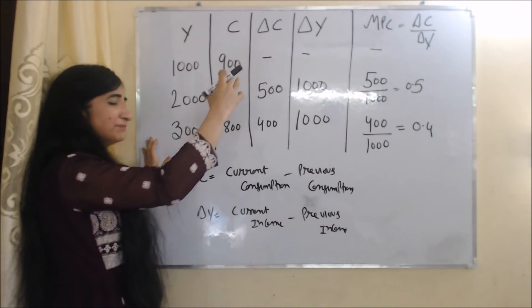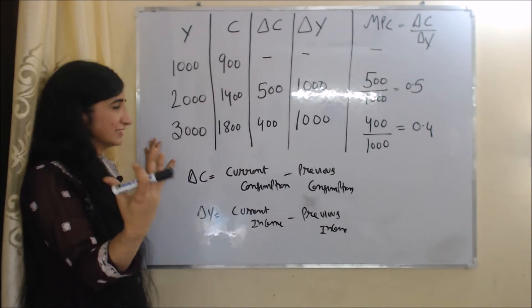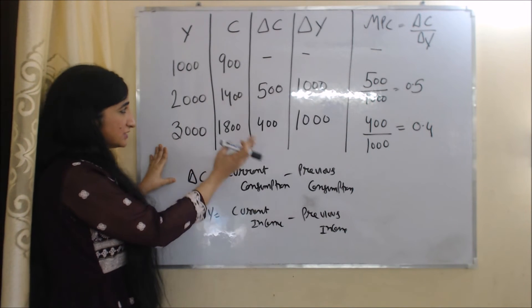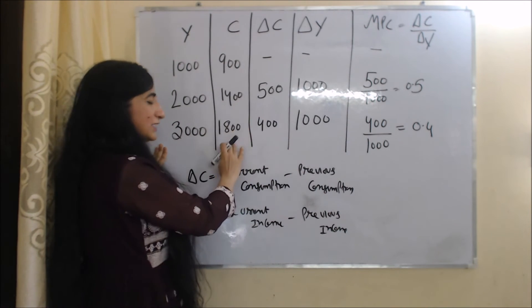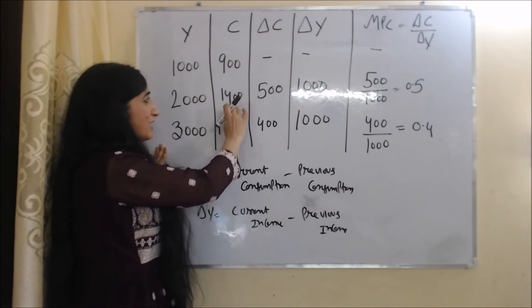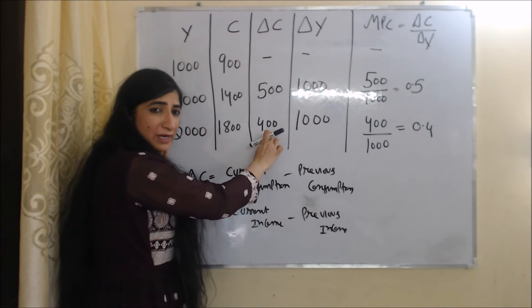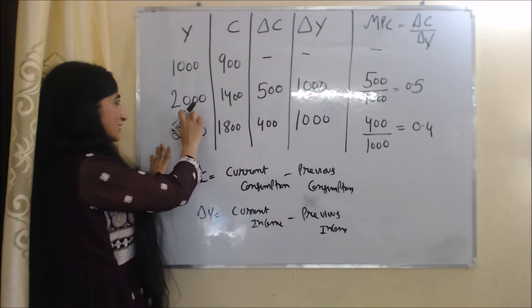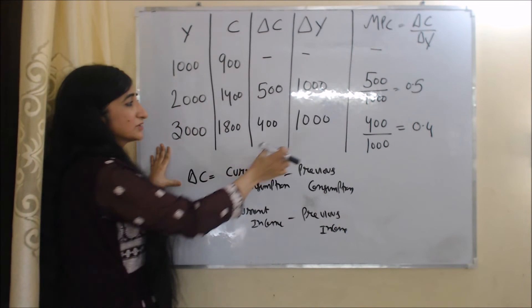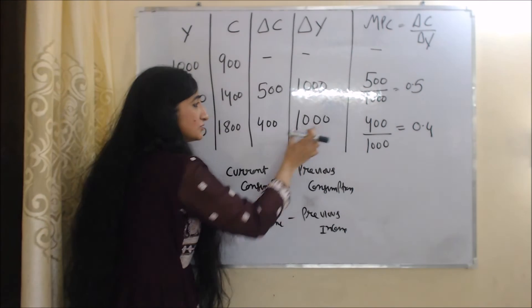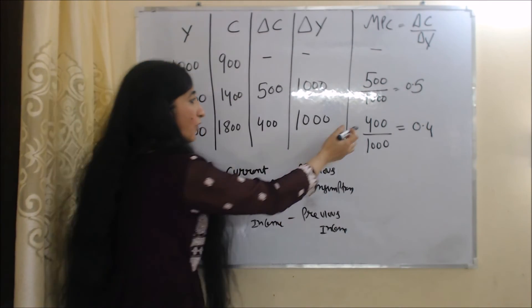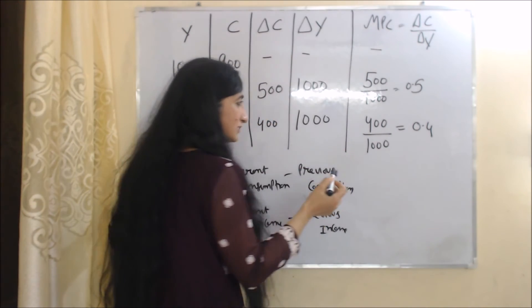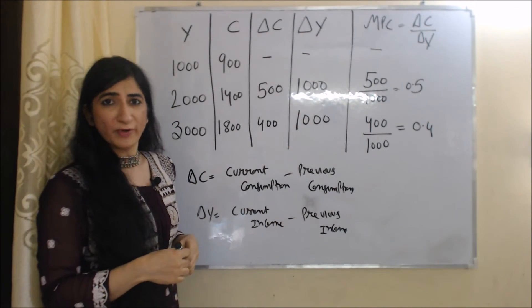Now we calculate MPC in the next case. Our income increased from 2,000 to 3,000 and our consumption increased from 1,400 to 1,800. So 1,800 minus 1,400 equals 400, which is the change in consumption. 3,000 minus 2,000 equals 1,000, which is the change in income. So 400 over 1,000 equals 0.4, and our MPC in the third case is 0.4.